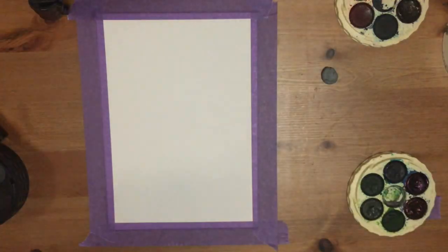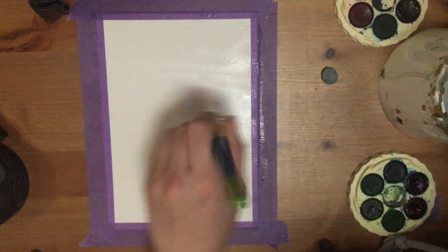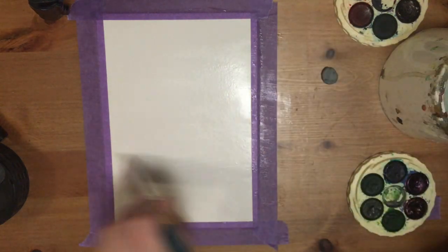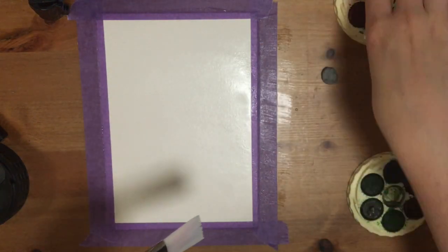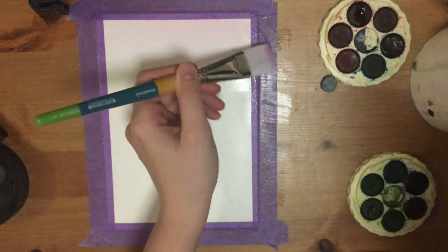To start off I've taped my paper to my table using masking tape. I'm using a hot press paper at the moment, I think it's 300 gsm, and I really lay on the water heavy for this one just to make sure that the entirety of the paper is wet.